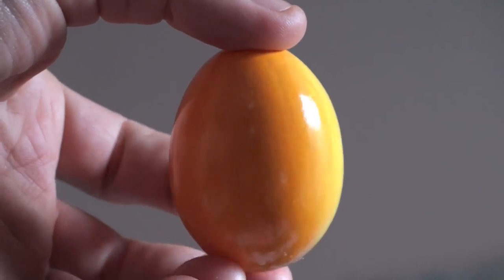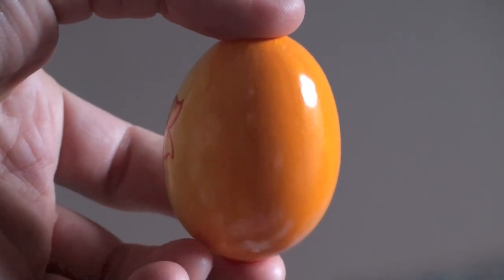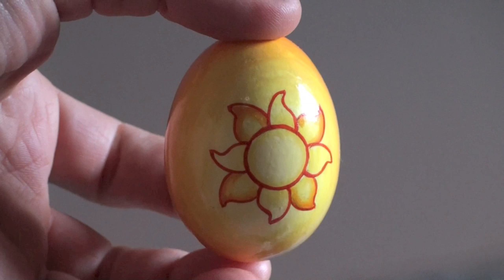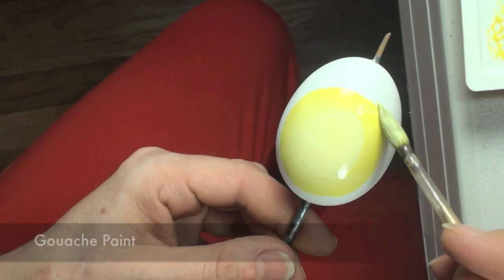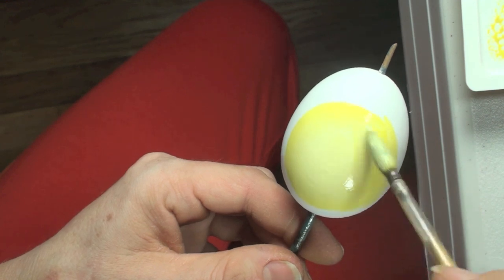Welcome to another tutorial where I'm going to teach you how to paint this Sun Dragon Easter Egg. For this tutorial we're going to use gouache paint and a white egg.